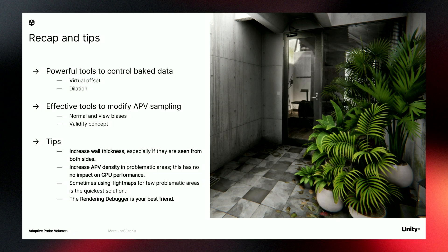A quick recap: we have tools to modify the baked data — virtual offsets and dilation — and tools to modify how APV is sampled at runtime — normal bias, view bias, and the validity concept. If you still struggle with light leaking, you can increase wall thickness a bit or boost the APV resolution. APV resolution has no impact on GPU performance — it only affects bake time, disk space, and CPU memory. So you can push it a bit as a quick solution. And if you truly cannot fix light leaking, you can use light maps for a few problematic objects. Remember, the rendering debugger is a great friend for understanding what's happening.